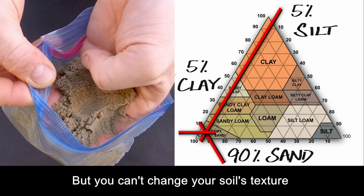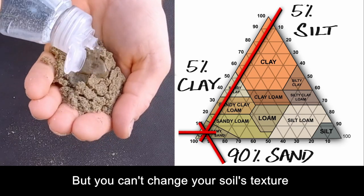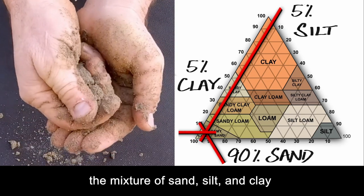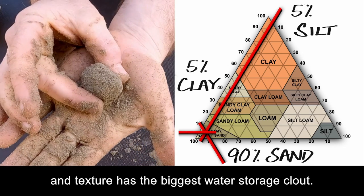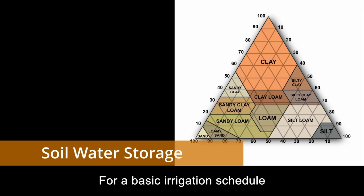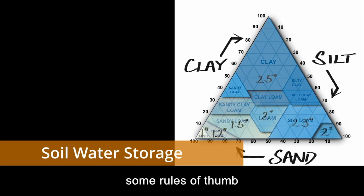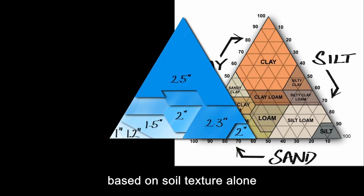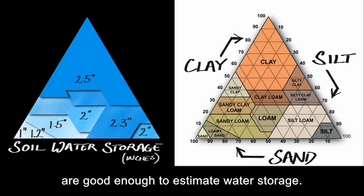But you can't change your soil's texture, the mixture of sand, silt, and clay. And texture has the biggest water storage clout. For a basic irrigation schedule, some rules of thumb based on soil texture alone are good enough to estimate water storage.